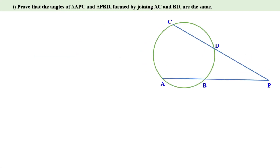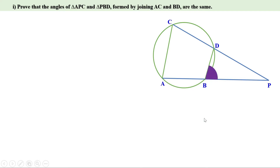Let us take one by one. First of all, we have to prove that the angles of triangle APC and triangle PBD are the same. For that, let us join AC and BD. Now, ABDC is a cyclic quadrilateral and this is an outer angle of the cyclic quadrilateral. We know any outer angle of a cyclic quadrilateral is equal to the inner angle at the opposite vertex.